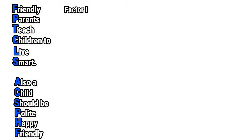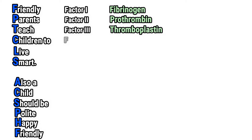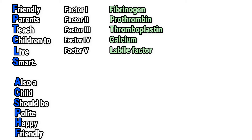F for Factor 1 — Fibrinogen. P for Factor 2 — Prothrombin. T for Factor 3 — Thromboplastin. C for Factor 4 — Calcium. L for Factor 5 — Labile Factor. Factor 6 is eliminated since it has no role in blood coagulation.